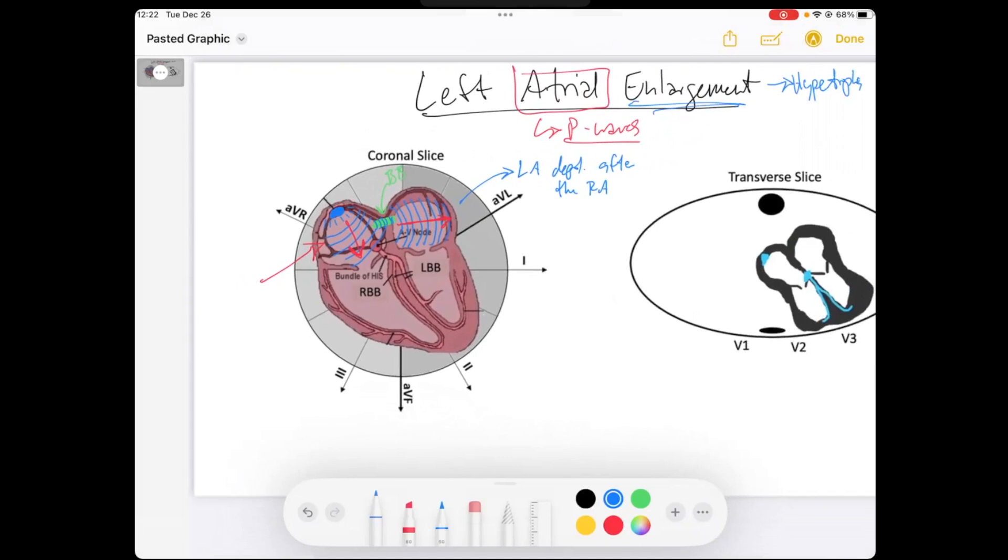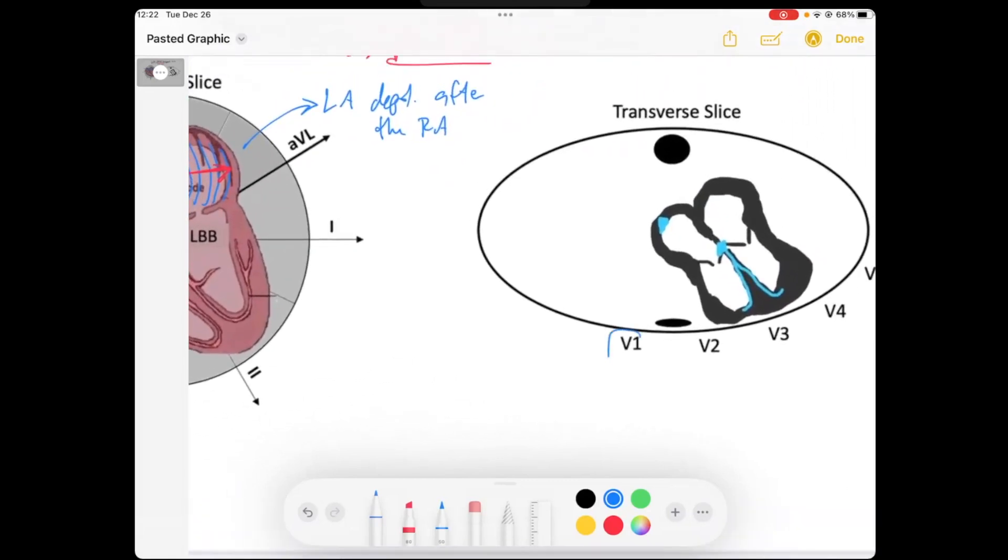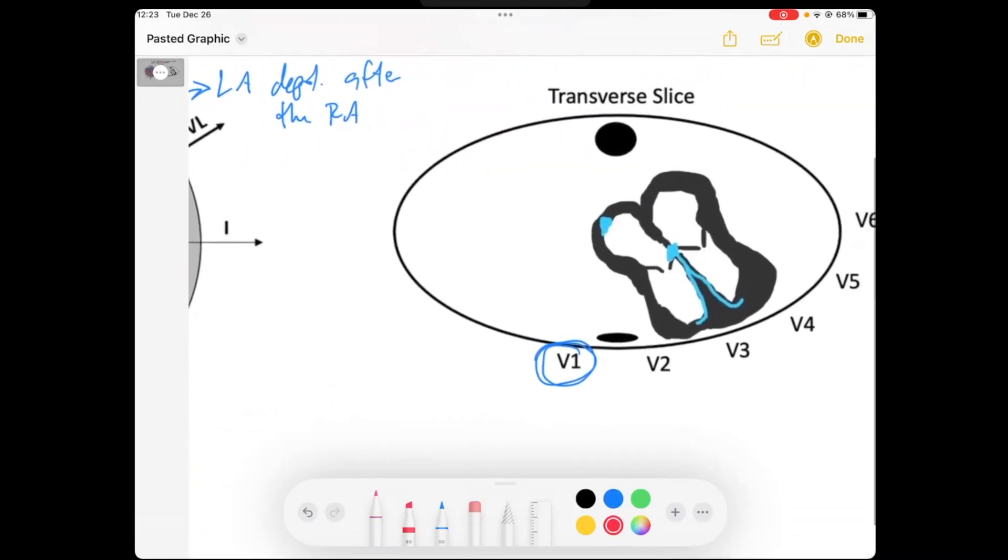The best lead is lead V1, similar to the right atria, except it's going to be kind of the opposite. So remember, if we trace it on this precordial lead view, our sinus node is going to fire. It's going to depolarize the right atria. And remember we said that we've got Bachman's bundle right here, and that signal is going to come and depolarize the left atria. This is the left atria.